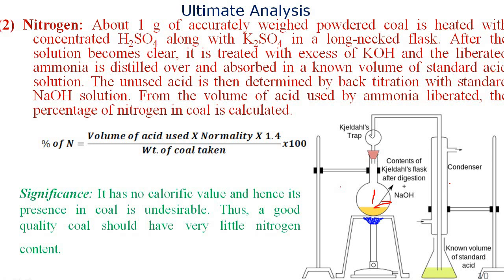Since we don't know exactly how much ammonia will be liberated, we use a certain amount of acid. The liberated ammonia neutralizes some of the acid; the remaining unused acid is titrated with a standard NaOH solution. From the amount of unused acid, we can determine how much acid was used by ammonia, and from that we calculate the percentage of nitrogen. The formula used is: Normality × Volume of acid used × 1.4 × 100 / weight of coal taken.